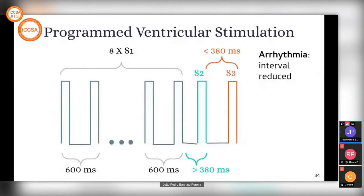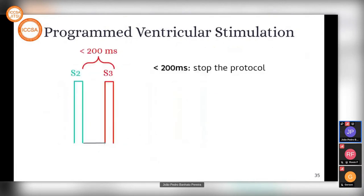If we have an arrhythmia, it's the same idea as normal propagation. We get the interval reduced to increase stress to the tissue. When we get to an interval below 200 milliseconds, we stop the protocol.